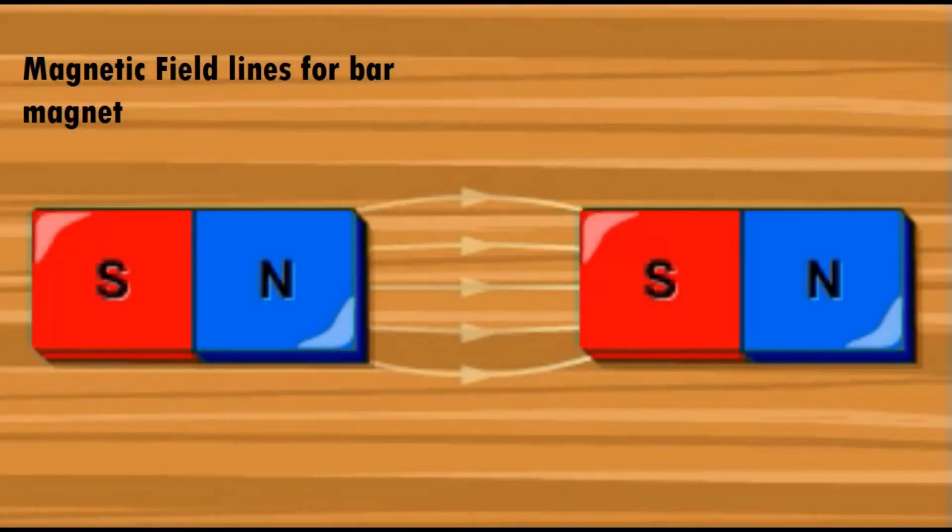Magnetic field lines for bar magnet: The lines should be outward from the north pole and inward to the south pole.